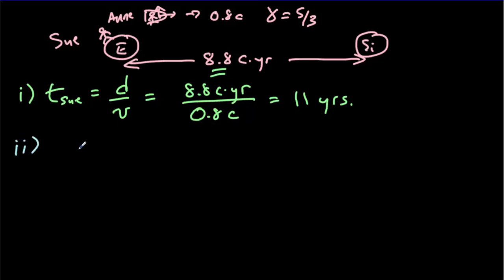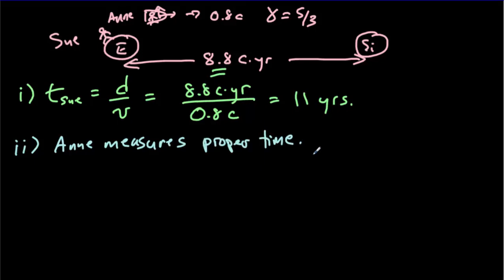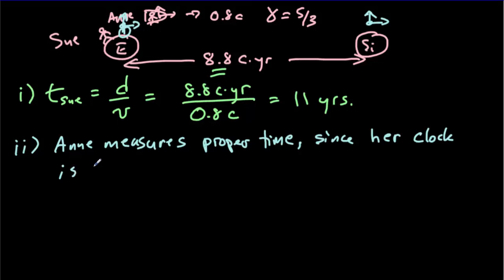Part II: who measures the proper time? It's the observer that's in the point frame — Ann measures proper time. How do we know that? Because in her frame, her clock is at the origin for event one and her clock is at the origin for event two. Since her clock is at the location of both events, she measures proper time.